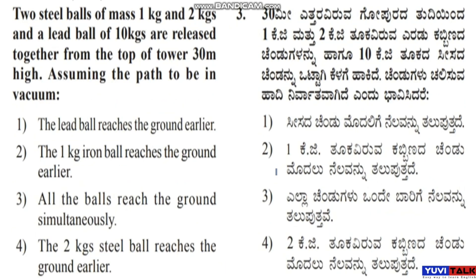The next question: Two steel balls of mass 1 kg and 2 kg, and a lead ball of 10 kg, are released together from the top of a tower 30 meters high, assuming the path to be in vacuum. Option 1: the lead ball reaches the ground earlier. Option 2: the 1 kg iron ball reaches the ground earlier. Option 3: all the balls reach the ground simultaneously.